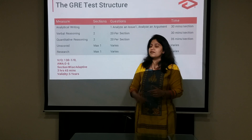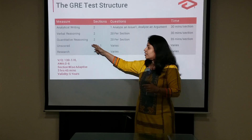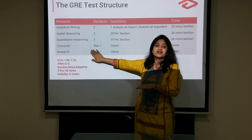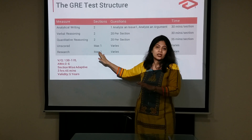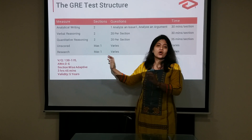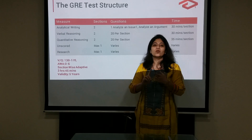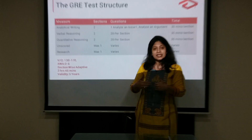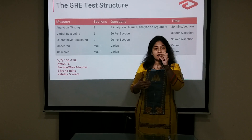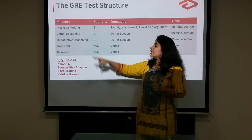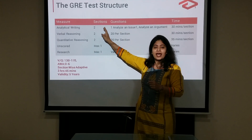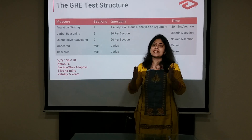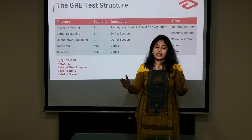You may also encounter an unscored section and a research section, but those are not going to make any difference to your total GRE score. The total GRE score will always be counted from verbal (170) plus quant (170), totaling 340, plus the band score of your AWA section. That band score for the AWA section is going to be between 0 to 6 bands.